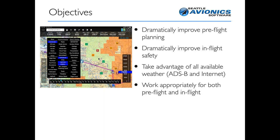A key objective — and this is a little bit more subtle — is to make sure that the system works appropriately, efficiently, and effectively in both pre-flight mode and once you're actually flying the plane. A lot of things you'll see on the screen, like toolbars and timelines, would be total noise if you are flying an airplane, but if you're doing pre-flight planning you probably want that. So the system has to adapt quite a bit to whether you're flying or doing pre-flight planning at your desk.